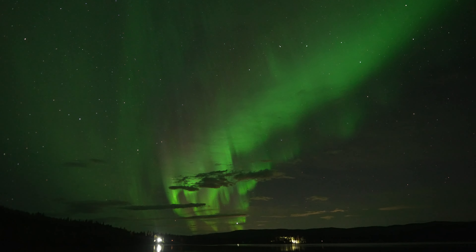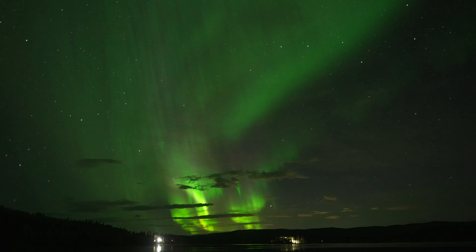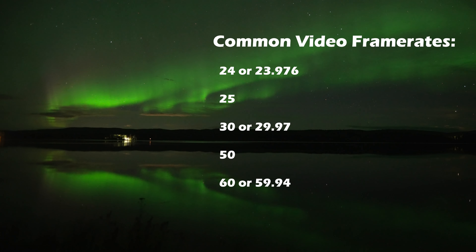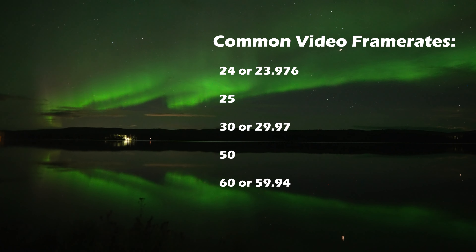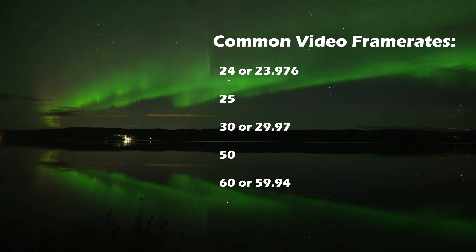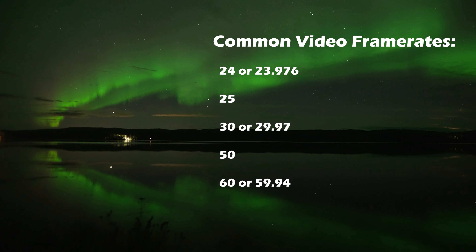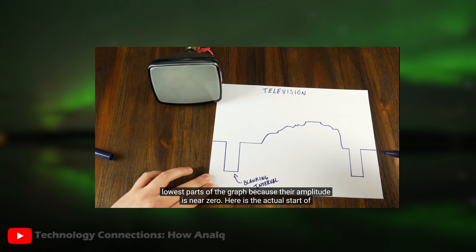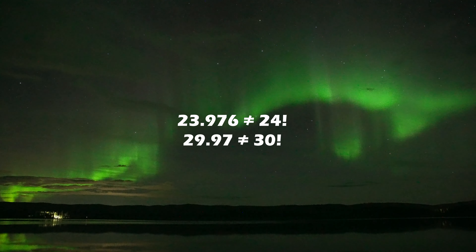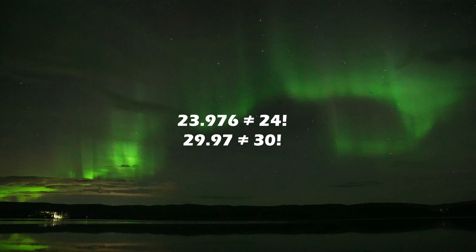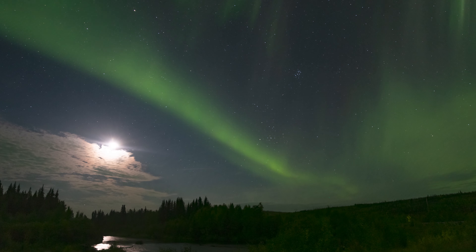I want to get some real quick math out of the way first. The most common frame rates for actual video output round out to 24, 30, or 60 frames per second, and some variations on those in Europe, like 25 and 50 frames per second. However, attention to detail matters. You'll also run into rates like 23.976 frames per second, or 29.97. I want to be really clear that 23.976 and 24 are not the same.